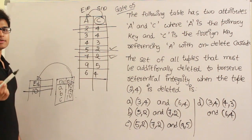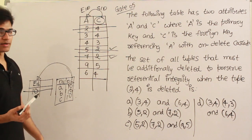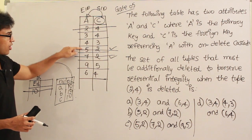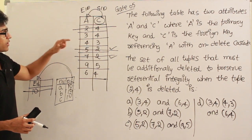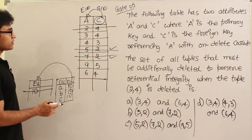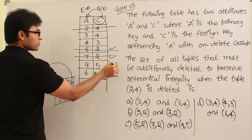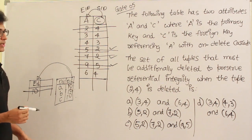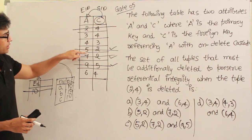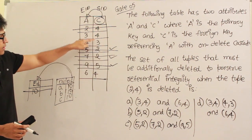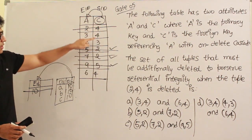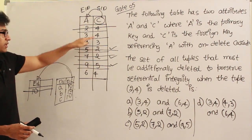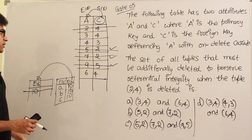But the deletion is cascading, which means it will not stop there. Now 5 has been deleted, so all the tuples referring to 5 should also be deleted. If you look at all the tuples referring to 5, there is one — so that one also has to be deleted. Now 7 is deleted, and all the tuples referring to 7 should be deleted, but there is no one referring to 7. And 9 is deleted, and no one is referring to 9 either.